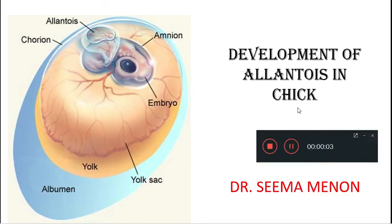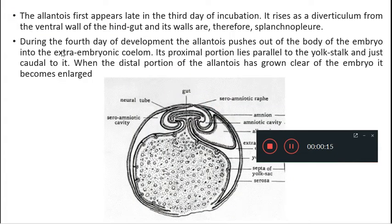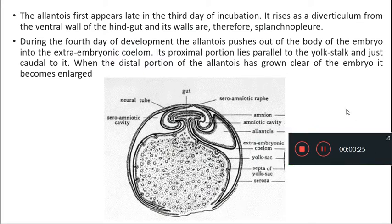Welcome to the third part of the lecture on the development of extra-embryonic membranes in chick. In this video we will see the development of allantois in chick. The allantois first develops late in the third day of incubation. It is arising as a diverticulum from the ventral wall of the hindgut.